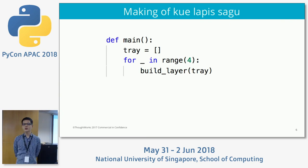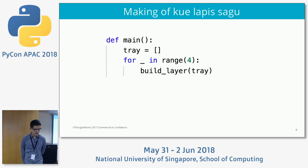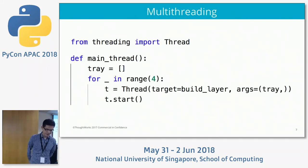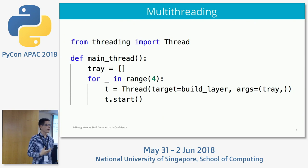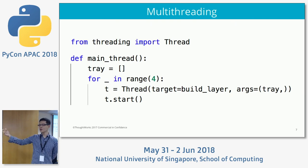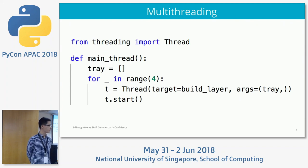Now if we were to make this code concurrent, the first thing that comes to mind is to create a thread. We use threading and thankfully in Python creating a thread is very easy. We need to import Thread from the threading module. In the main thread there's almost no modification — you still instantiate a tray, you still have the for loop for four times — but instead of calling build_layer directly we instantiate the thread, telling it to call build_layer on a separate thread with the arguments, then start the thread. Eventually we'll have to join it.